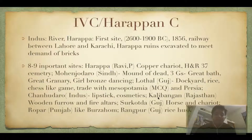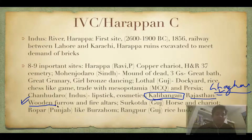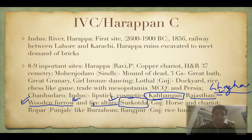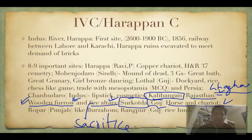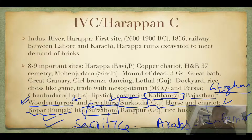Kalibanga is in Rajasthan on the banks of the Ghaggar River, and shows evidence of wooden furrow and fire altar. Surkotada is in Gujarat and shows evidence of horse and chariot, though they were of inferior quality — superior horses were with the Arabs and Aryans. Ropar is in Punjab and, like Burzhahum, had pit dwellings and burials of dogs with masters. Rangapur is in Gujarat and has evidence of rice husk.